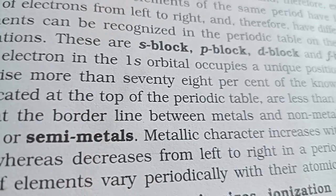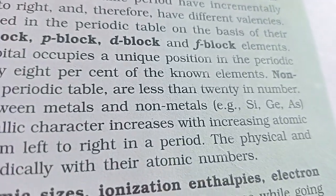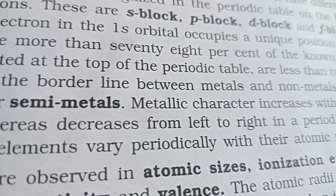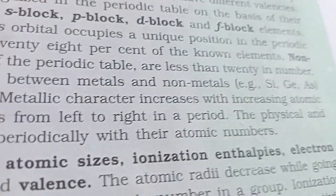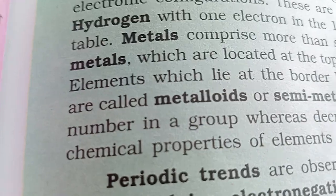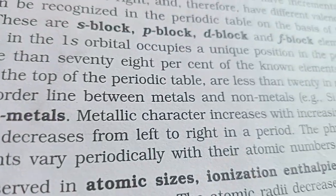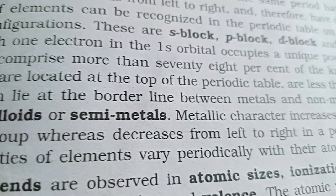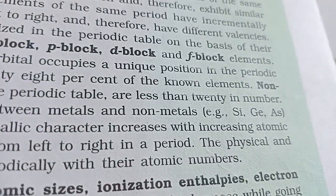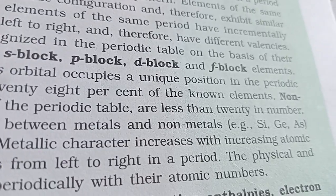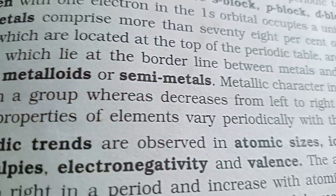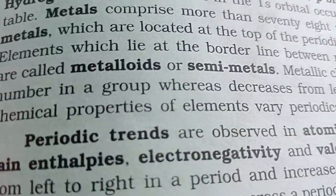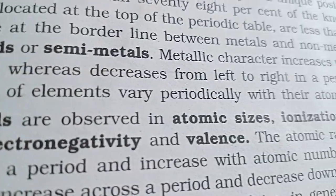Hydrogen, with one electron in the 1s orbital, occupies a unique position in the periodic table. Metals comprise more than 78% of the known elements. Non-metals, which are located at the top of the periodic table, are less than 20 in number. Elements which lie at the borderline between metals and non-metals — for example, silicon, germanium, and arsenic — are called metalloids or semi-metals.